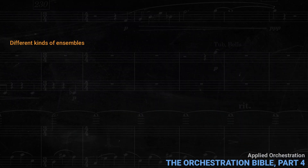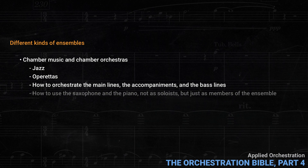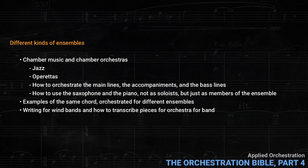The following chapter is about different kinds of ensembles. Most of the book so far has been about more or less standard orchestras. Here he discusses chamber music, chamber orchestras, with reference to Milhaud, Schoenberg, and Satie. When talking about smaller orchestral ensembles, he also mentions jazz and operettas, and specifically discusses how to orchestrate the main lines, the accompaniments, and the bass lines, as well as how to use the saxophone and the piano not as soloists but just as members of the ensemble. Then he gives examples of the same chord orchestrated for different ensembles. Finally, he has a section on writing for wind bands, how to transcribe pieces for orchestra for band, as well as a short section about the effects of different keys.